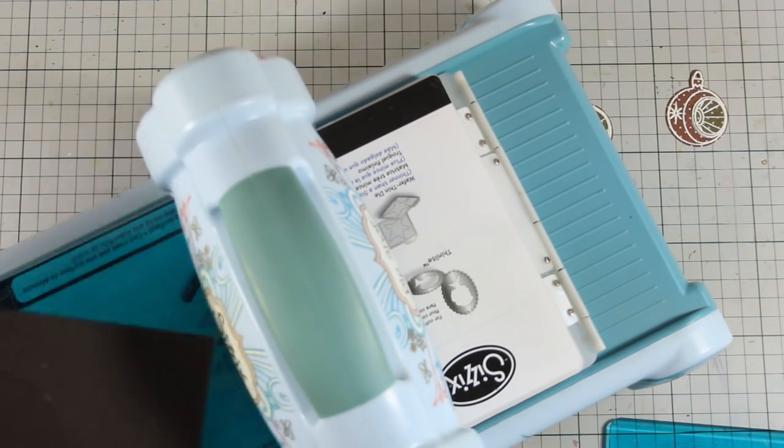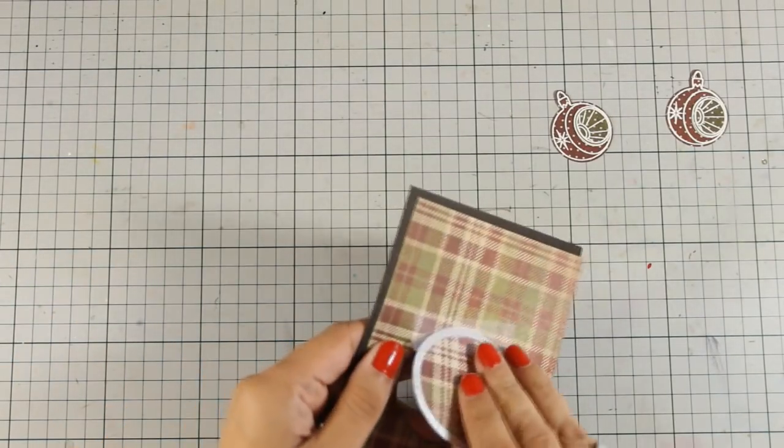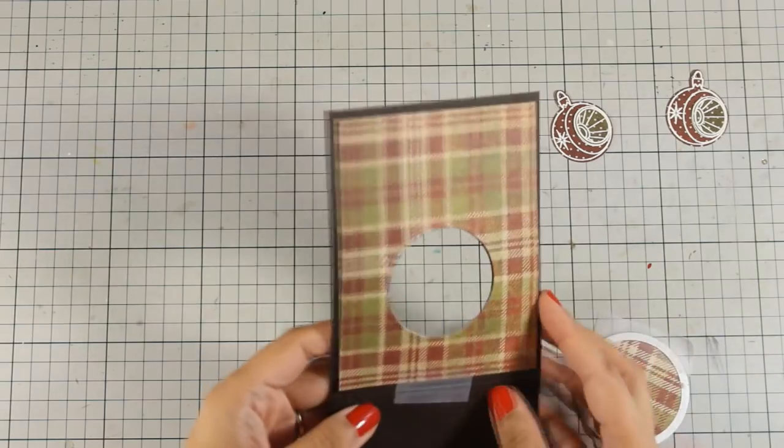I am going to show you what I mean here. I am going to remove the die and you can see that I can separate the paper from the card base.